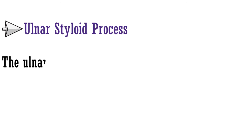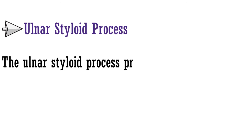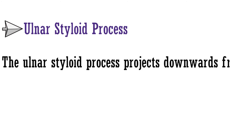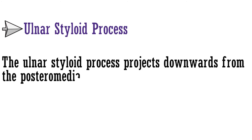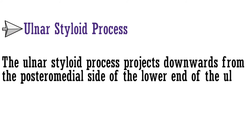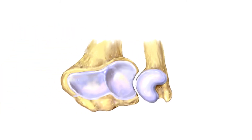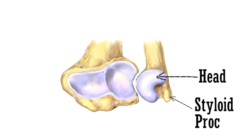The second part of the distal end is the ulnar styloid process. The ulnar styloid process projects downwards from the posteromedial side of the lower end of the ulna. This is the inferior view of radius and ulna — the shaded area is the head of the ulna, and this projecting process is the ulnar styloid process.